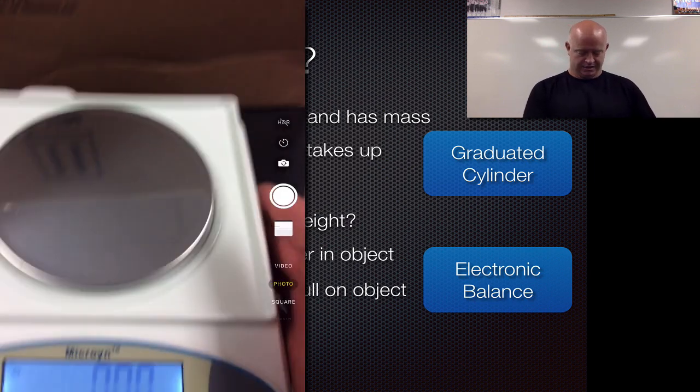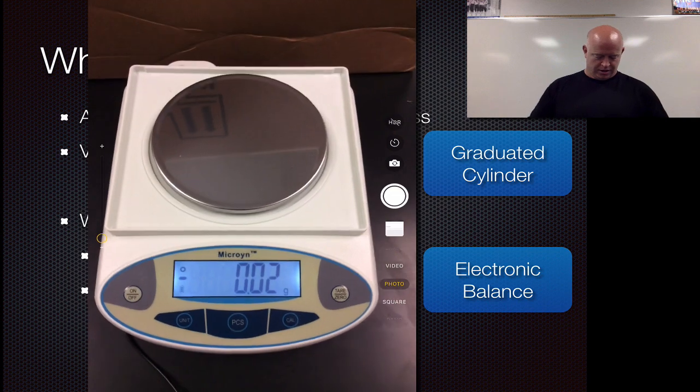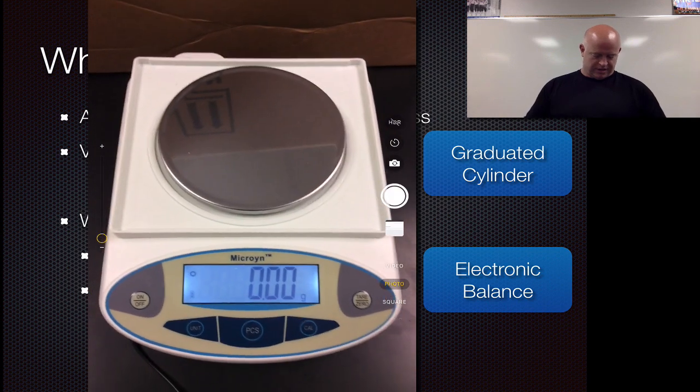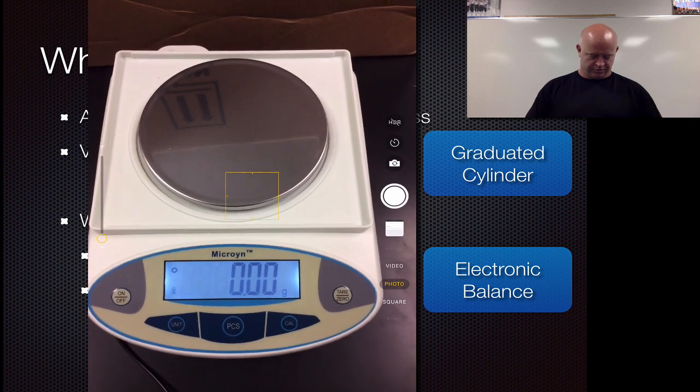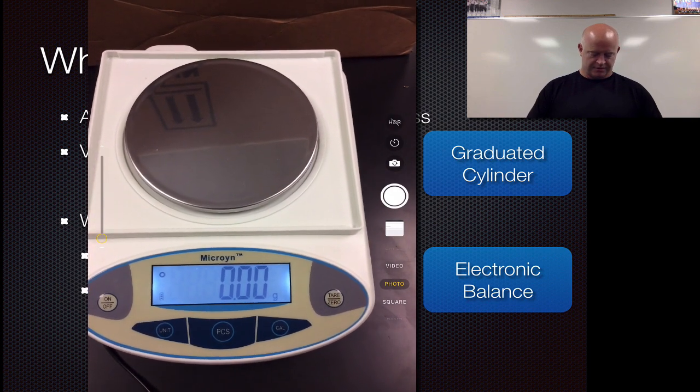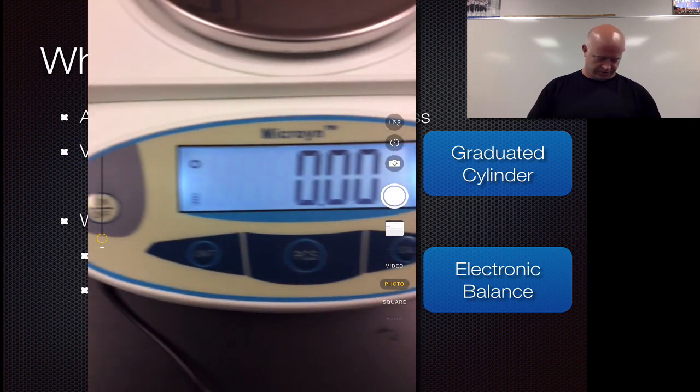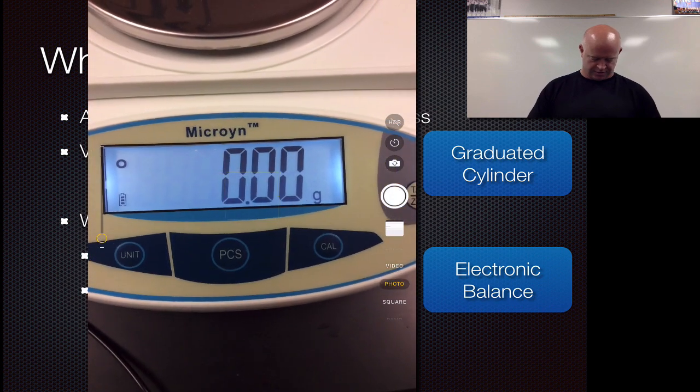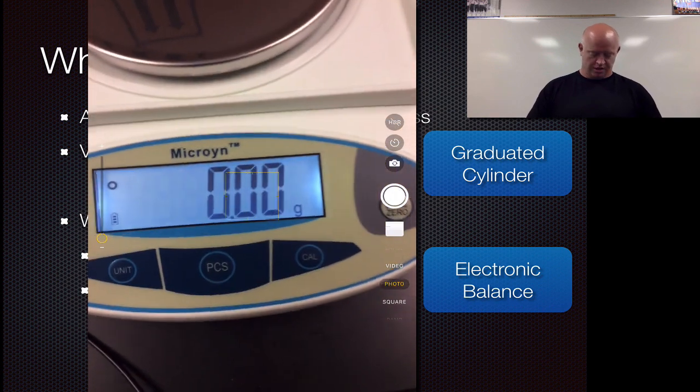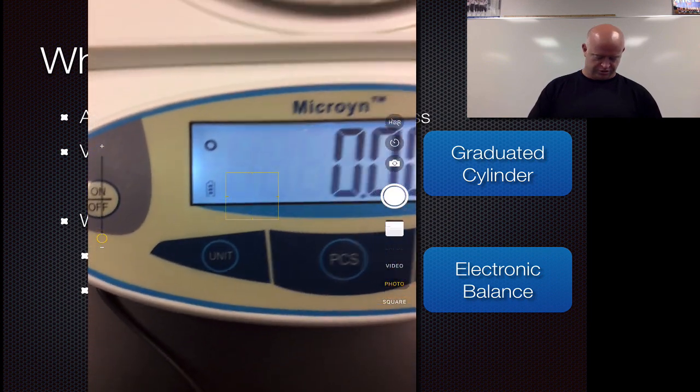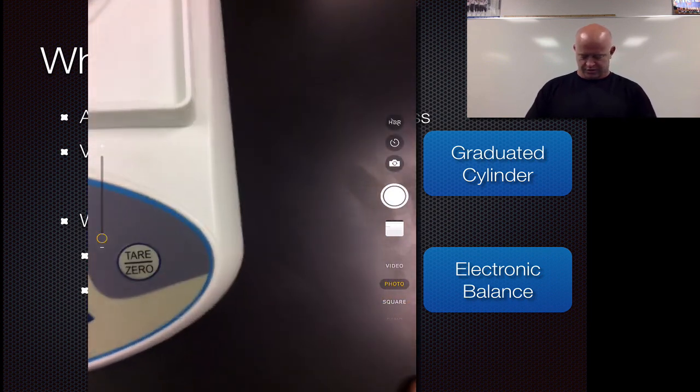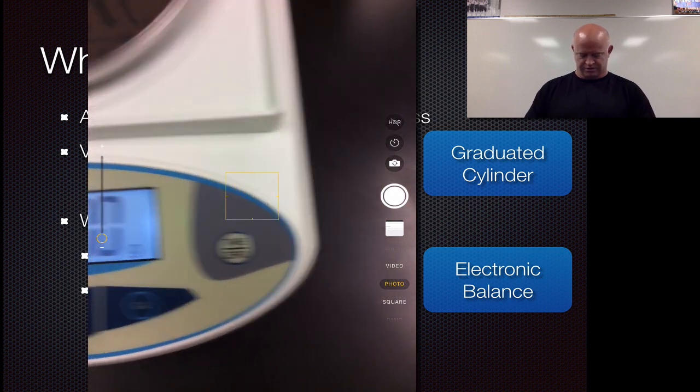For mass, we use an electronic balance. Here's our electronic balance; we have several different types, but this is the one we're going to be using today. Some common things on it: you have your on/off button over here, the units button, PCS, and calibrate—you should never have to touch those unless it doesn't say grams right there. If it doesn't say grams, you will want to change your units to grams.